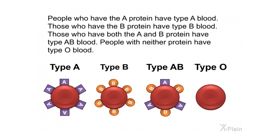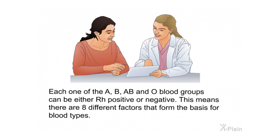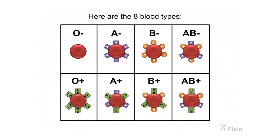People with neither protein have type O blood. Another protein found on some red blood cells is the Rh, or Rhesus, protein. People with this protein are called Rh positive; those without it are Rh negative. Plus and minus signs are used to write positive and negative. Each of the A, B, AB, and O blood groups can be either Rh positive or negative, meaning there are eight different blood types: O negative, O positive, A negative, A positive, B negative, B positive, AB negative, and AB positive.